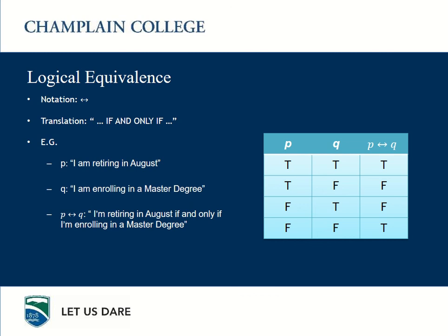And then we have the logical equivalence. The symbol is a line with arrows pointing in both directions, and the translation is 'if and only if.' Applying this to the same situation: 'I am retiring in August if and only if I am enrolling in a Master's degree.' This is TRUE if I retire in August and enroll in a Master's degree, or if I don't retire and don't enroll. So if both are TRUE or both are FALSE, the equivalence is TRUE. If one is TRUE and the other is FALSE, the equivalence is FALSE.